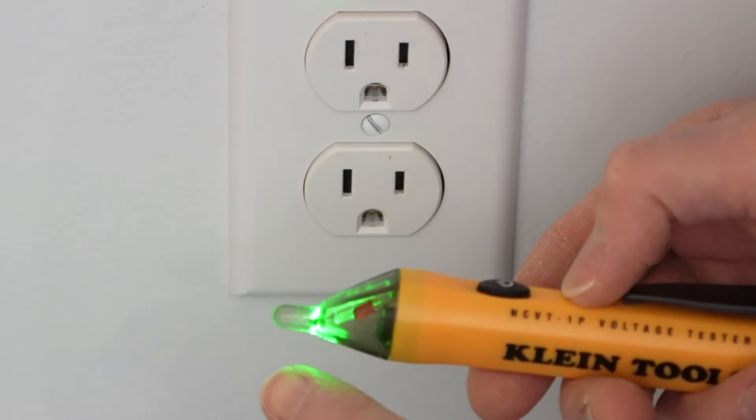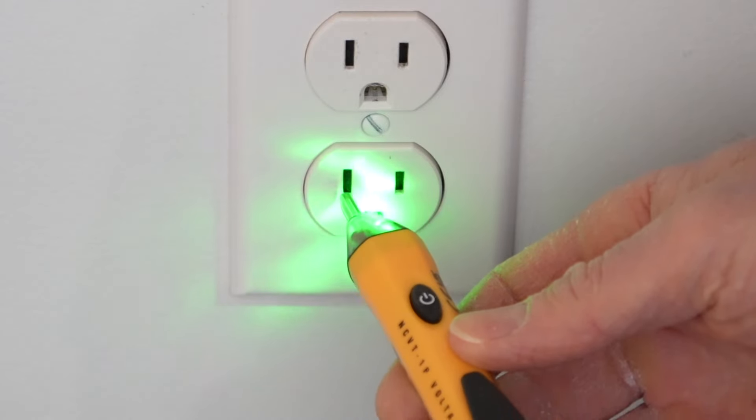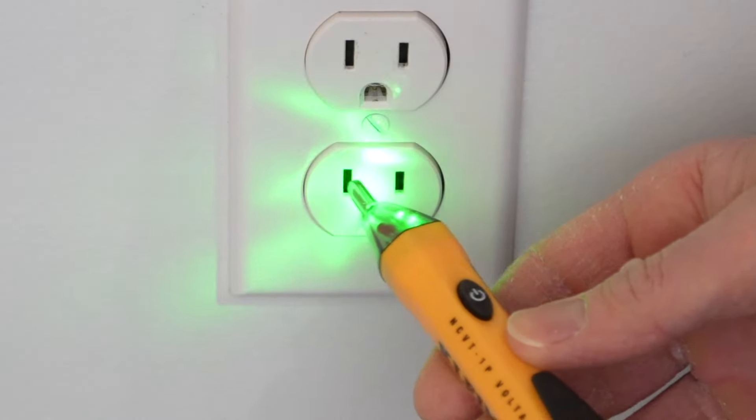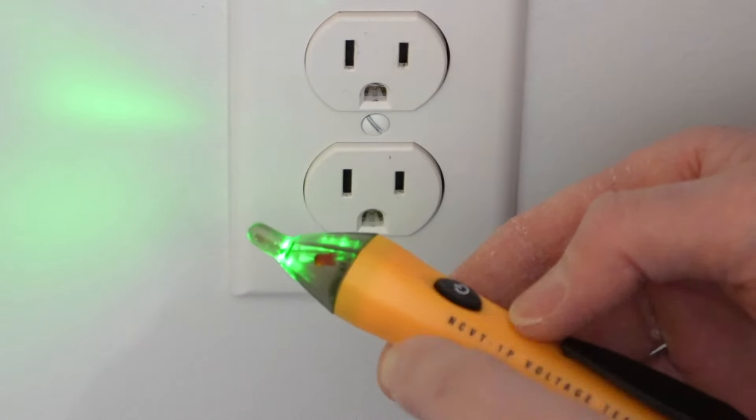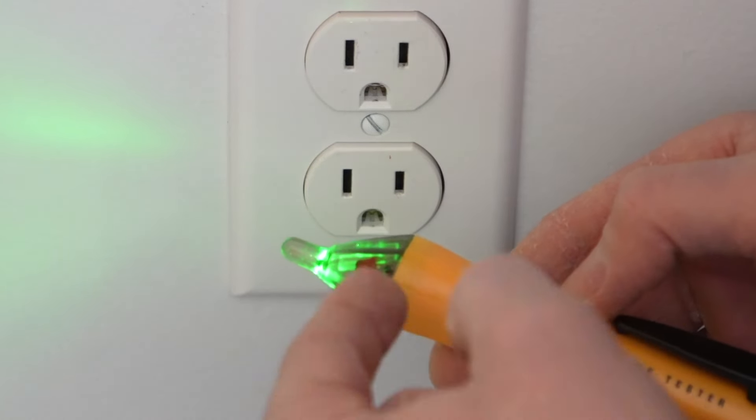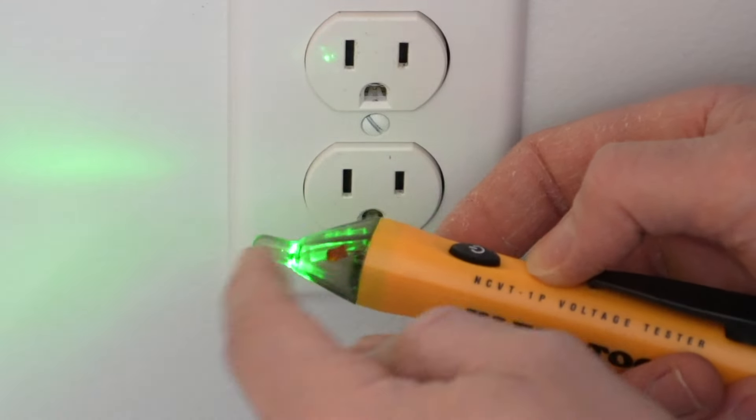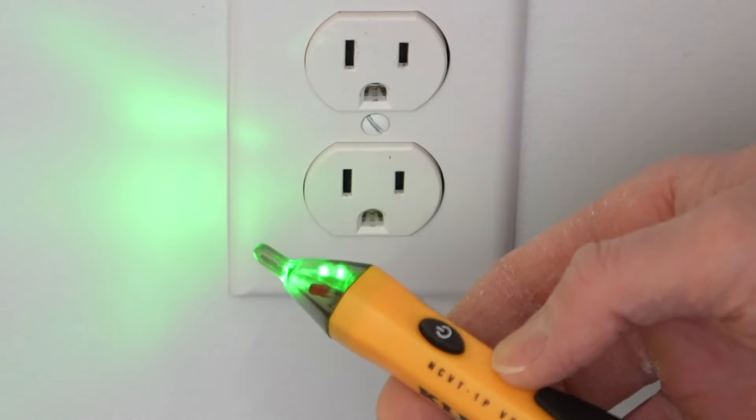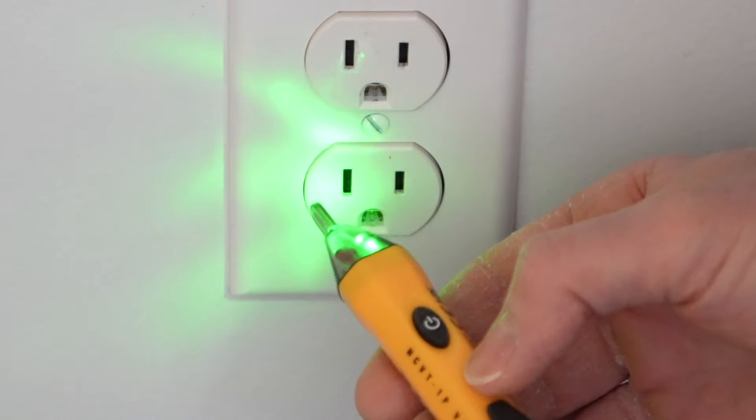Something you're going to want to do before you rely on this tester is go to a wire that you know is hot, for instance, this to make sure your tester is working properly before you use it to rely on turning off an outlet to work on it. As you've probably already noticed, the end of the tester is shaped like the prong of a cord. That's because it'll allow you to slide the end of the tester into a receptacle.